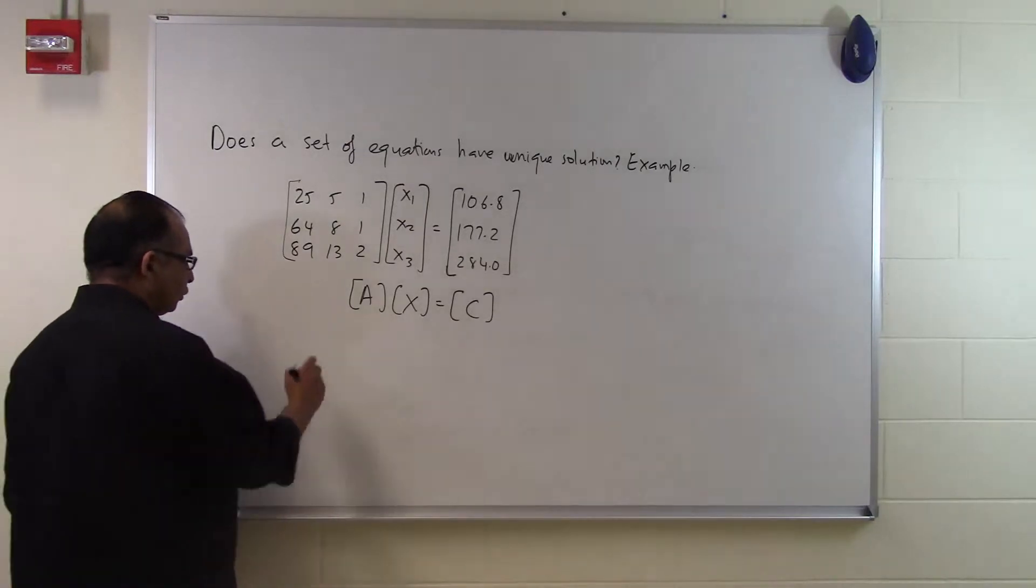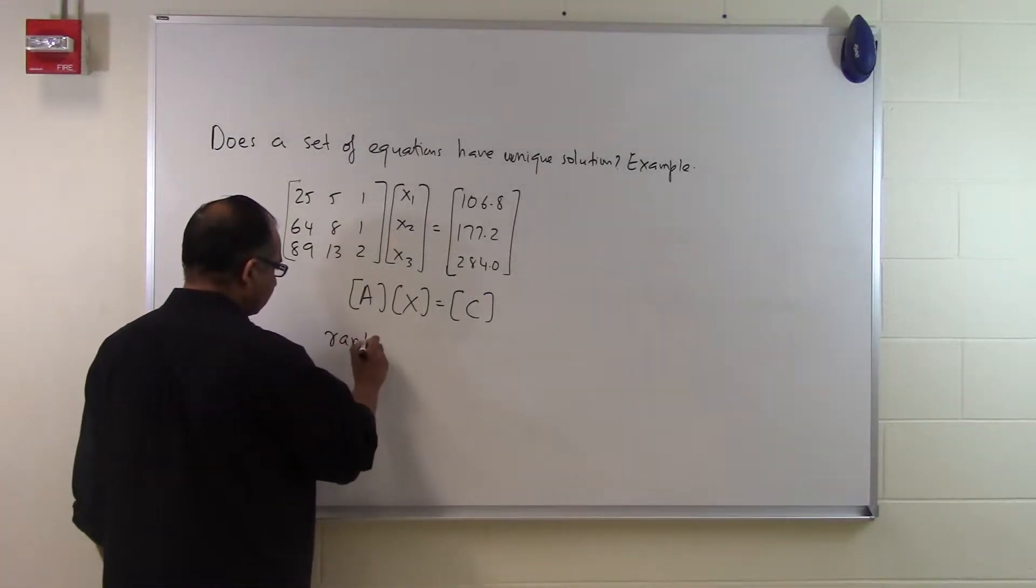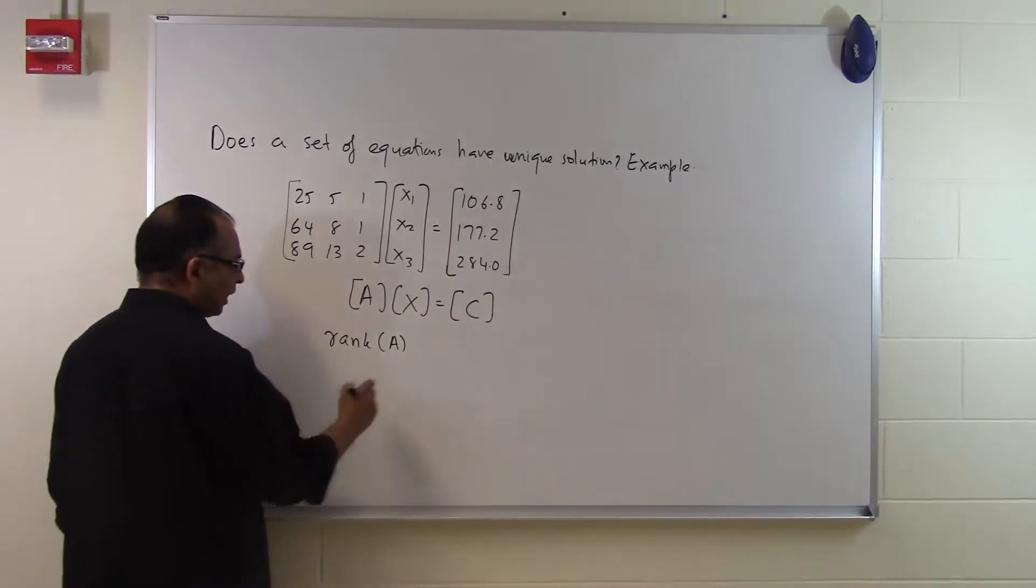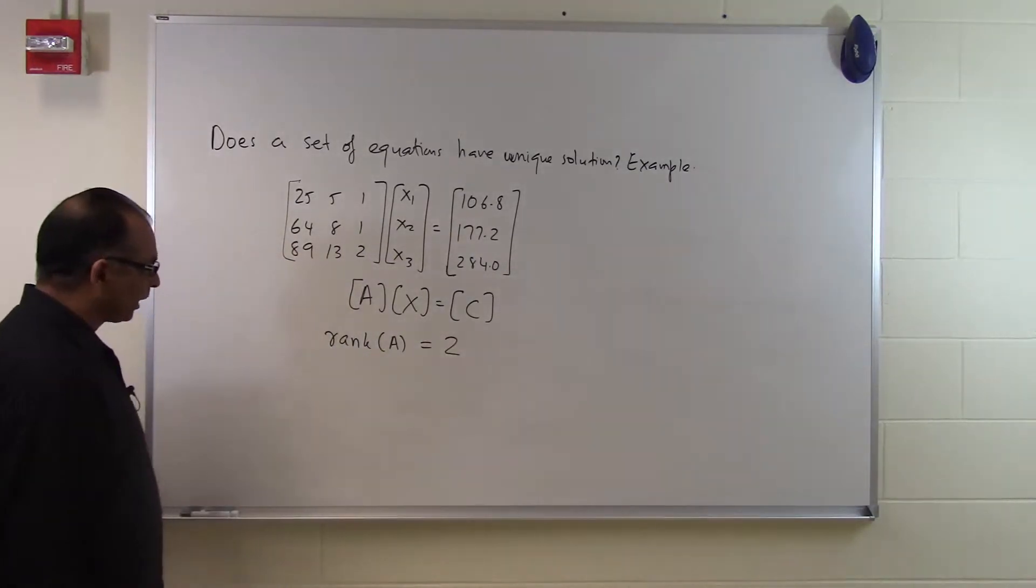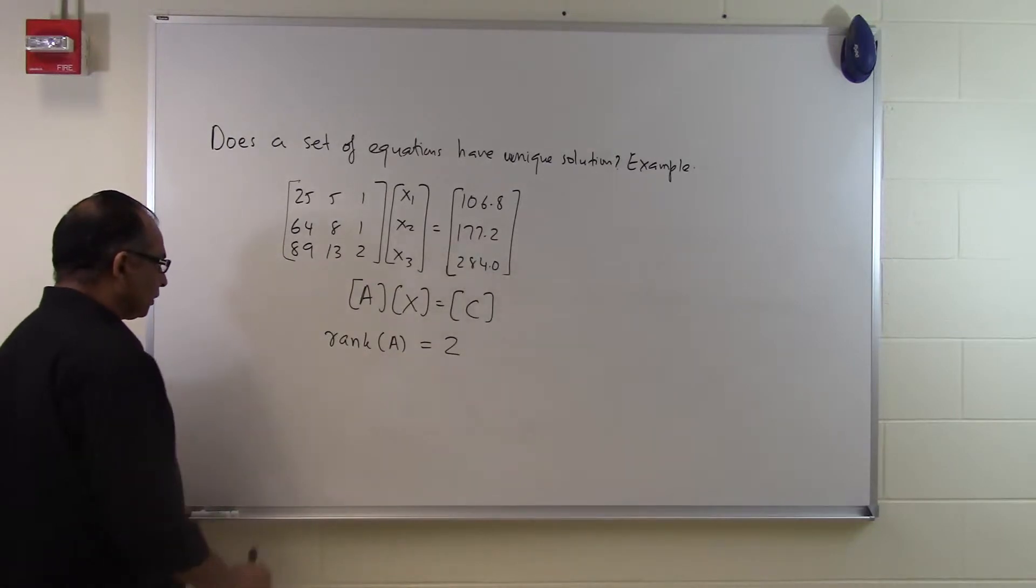So the first thing which I want to do is I want to find rank of A. So I want to find the rank of the coefficient matrix and it turns out to be 2. You will have to work it out to see why the rank of A is 2.